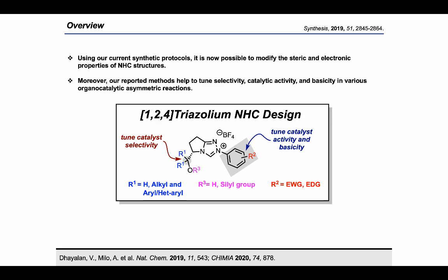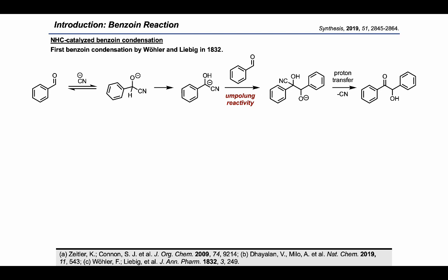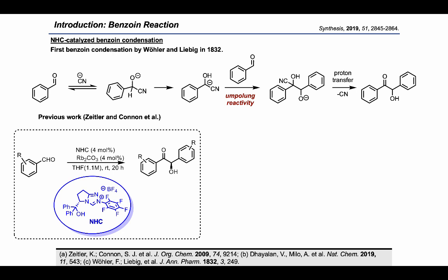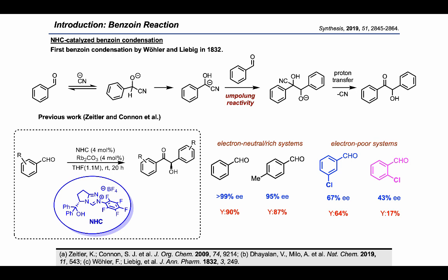Next, I'd like to talk in more detail about benzoin reactions. The cyanide-catalyzed benzoin condensation reaction was discovered by Uhl and Zippik in 1832 via an umpolung approach. Recently, in 2009, Scheidt and Connon reported a highly enantioselective benzoin reaction using 4 mol% NHC catalyst. This protocol works quite well for simple benzaldehyde and 4-methylbenzaldehyde, producing high enantioselectivity and yield. However, electron-withdrawing substrates like 2,3-halobenzaldehydes produce only moderate selectivity and yield. Recently, we found a solution for this via mechanistic understanding, published in Nature Chemistry.